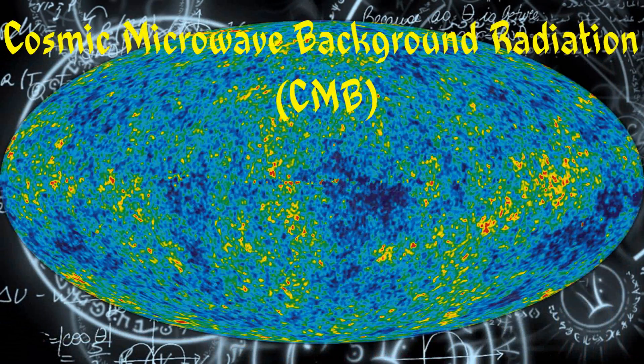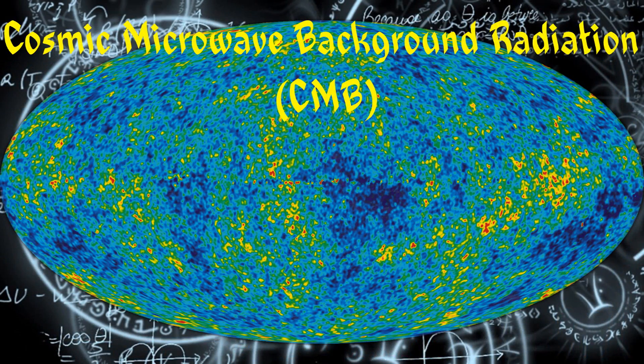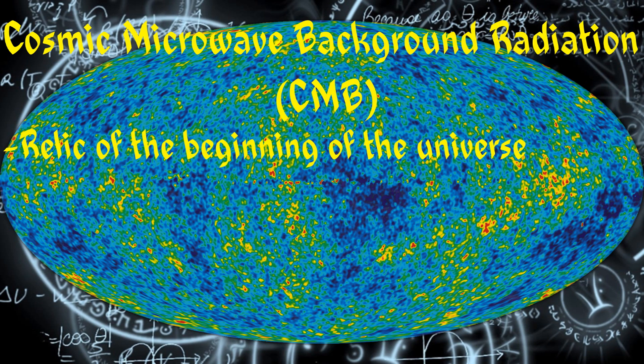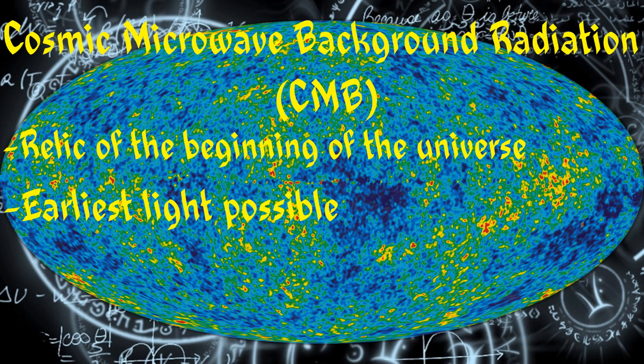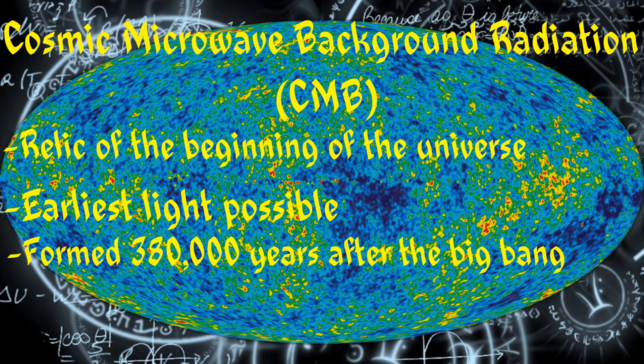This is the Cosmic Microwave Background Radiation, CMB for short. This radiation is a relic of the beginning of the universe. It is the earliest light possible, formed around 380,000 years after the Big Bang. This radiation shows what the early universe looked like.